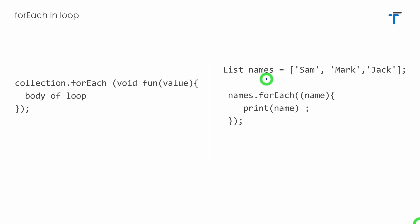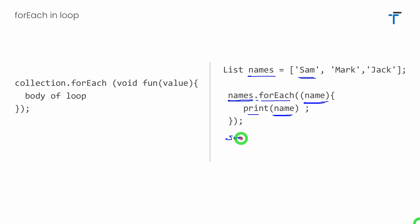To understand forEach better, I have a list of names with three names. I've written the collection name names, then a dot, then forEach. Inside, I have a function that accepts an individual name as a parameter, and inside the body I simply print the value of name. The first iteration receives Sam, so Sam is printed. The second time, it receives Mark, so Mark is printed. The third time, it receives Jack, so Jack is printed on screen.